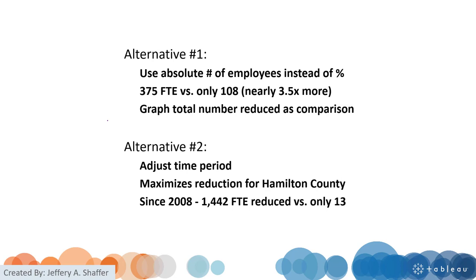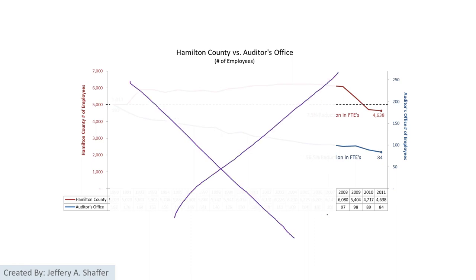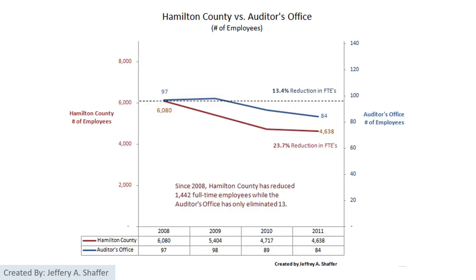There are two ways. First, we can use absolute numbers instead of percentages — because for the red team, they have more staff reduced in absolute numbers. Or we can adjust the time period to maximize the reduction for the county — looking at data only since 2008. If we ignore the earlier data and look only at after 2008, we can see that the red team — the county — has more staff being reduced. So visualizations are not objective; you can customize your visualization to tell the story that is good for your team and meet your purpose.